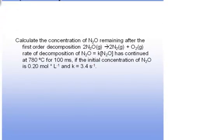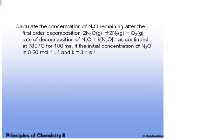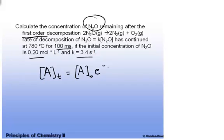Here's an example of using that integrated rate equation for first order. In this particular case, the first order decomposition of nitrous oxide to give nitrogen and oxygen has continued for 100 milliseconds. If the initial concentration is 0.2 and K equals 3.4, what is the concentration of the remaining nitrous oxide? So you can use the form of the equation [A]_t equals [A]_0 times e to the negative Kt.